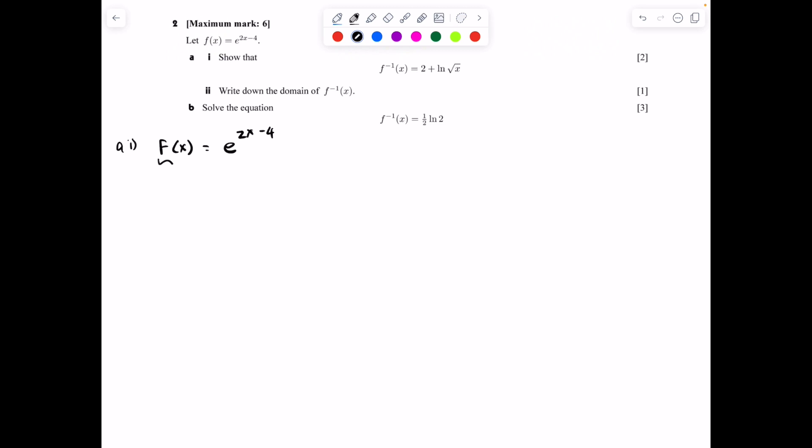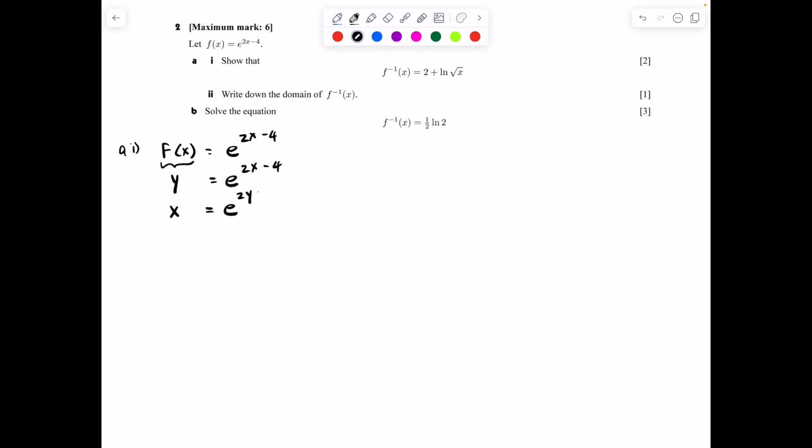So we're going to start off by calling our f(x) y and just rewriting here. Now we're going to swap the x and the y. And so we get that x = e^(2y-4). So basically everywhere x was, I put y. Everywhere that y was, I put x.